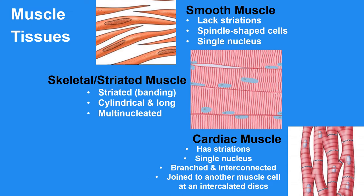Skeletal muscle consists of bundles of long, cylindrical cells called muscle fibers. Each muscle fiber of skeletal muscle is multinucleated. The arrangement of sarcomeres along the muscle fibers gives the cells a striated appearance. Cardiac muscle is striated like skeletal muscle, but unlike skeletal muscle, cardiac muscle has branched fibers that are interconnected via intercalated discs.